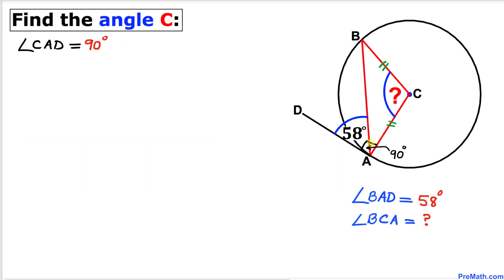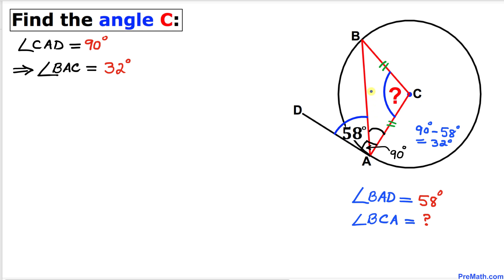Thus our angle CAD turns out to be 90 degrees. Now we can see that this angle is 90 degrees and this angle BAD is 58 degrees, then this angle has got to be 90 minus 58. Therefore our angle BAC turns out to be 32 degrees.